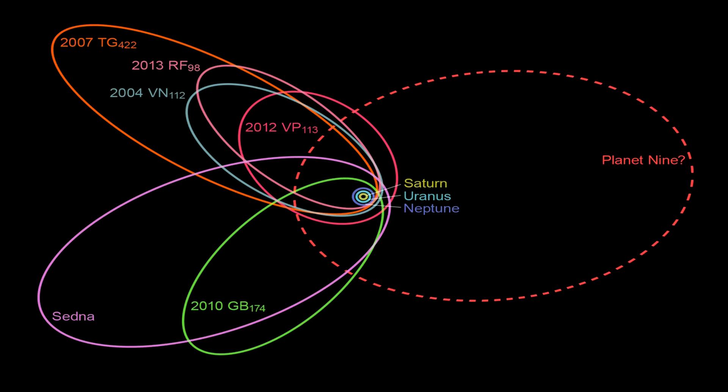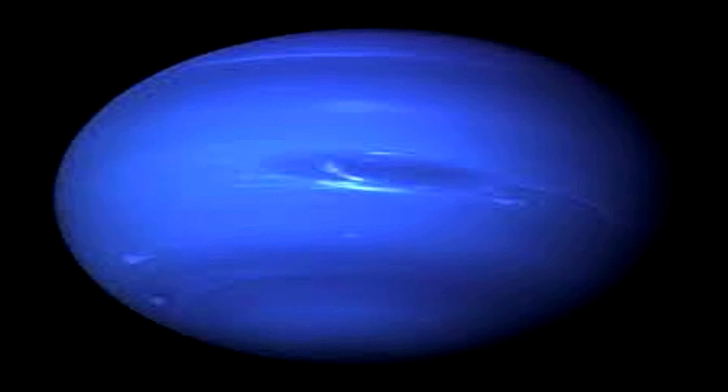The only reason we know that Planet 9 might exist is because of how it is influencing objects due to its gravity. And for those of you who might be thinking, well, this doesn't seem like a good way of finding planets, this is actually how we discovered Neptune.